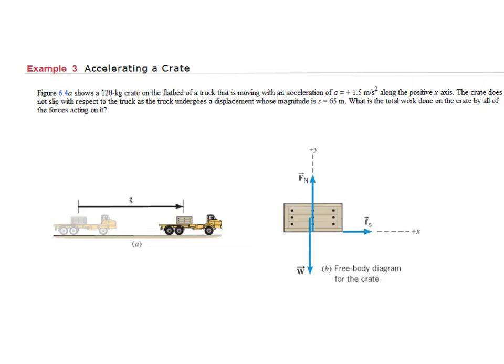Here in this next example, we have a crate sitting on the back of a flatbed truck, and the truck is accelerating down the road with an acceleration of 1.5 meters per second squared. Now, if the crate doesn't slip off of the back of the truck, it means that there's a frictional force between the crate and the bed of the truck that's being applied to the crate, so that the crate moves with the same acceleration. So if we want to look at this displacement of 65 meters, undergoing an acceleration of 1.5 meters per second squared, what's the total work done on the crate by all of the forces acting on it.